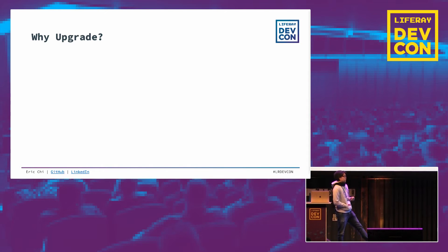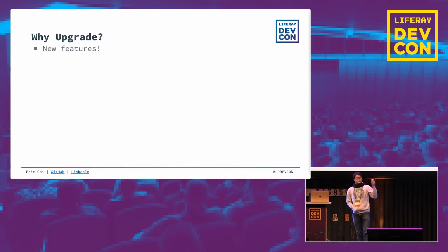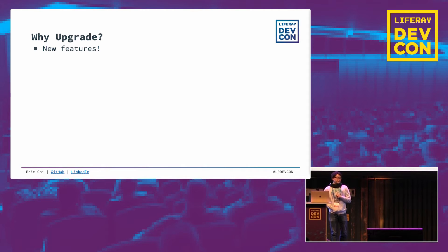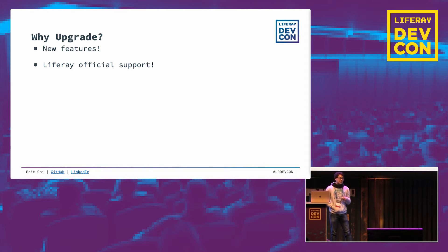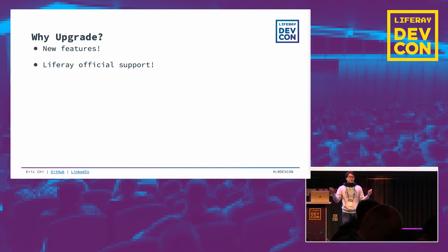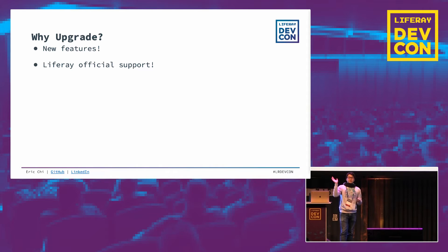The first question is: why do we want to upgrade? Obviously new features — we have content forums, artificial intelligence coming out, and much more. The next reason is Liferay official support. If you're on 6.1, end of life has already ended, so you don't have support from our support team anymore. Being on a newer version of Liferay allows you to extend that support lifetime. You can find end-of-life dates on our website.